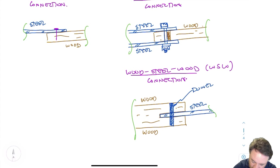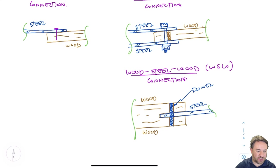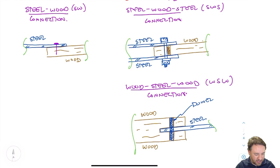Remember that steel dowels are designed the same way as bolts, but the difference is that we have tight tolerance on the hole — the dowel is pushed right into the hole and they are the same size, so the dowel is friction-fit. This is different from the bolt cases drawn above, where the hole is bigger than the bolt. So that covers single shear plane connections and double shear plane connections for bolts and nails.